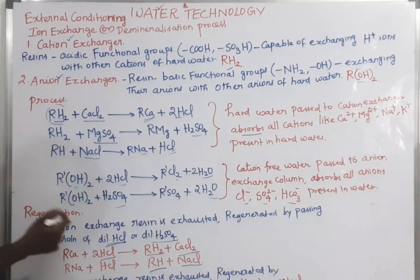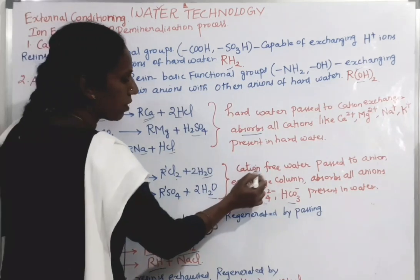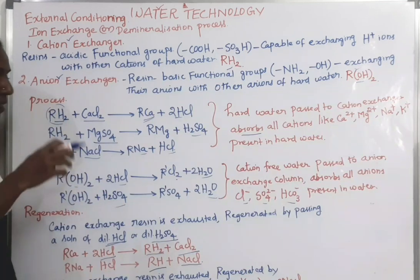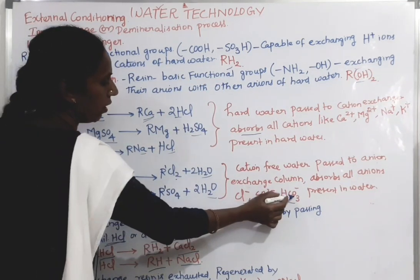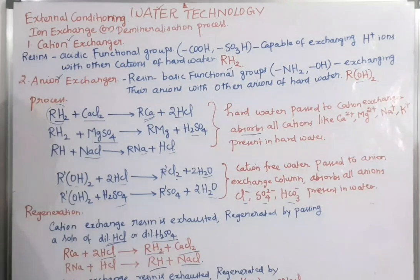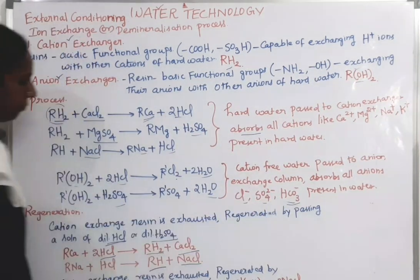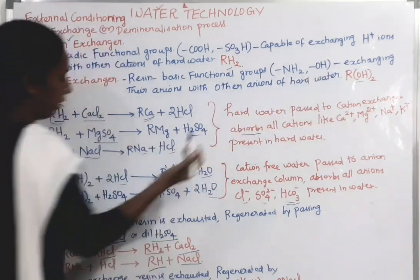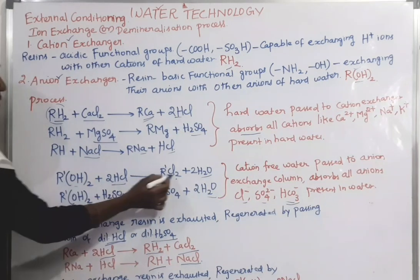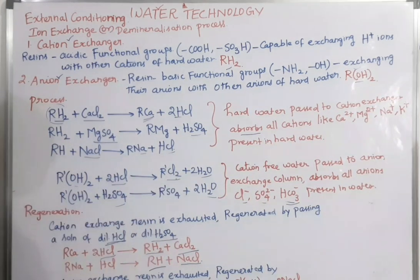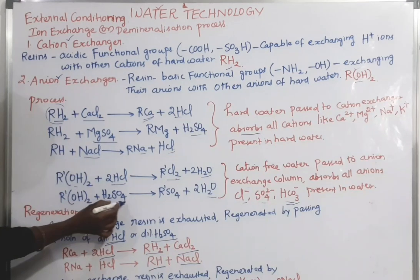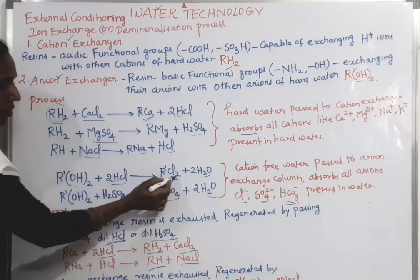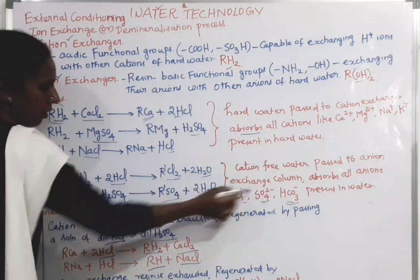In the next step, the water which is free from cations is passed into the anion exchange column, which absorbs all the anions present in the water — that is, Cl⁻, sulphate, and HCO3⁻ (bicarbonate). The reactions are: R(OH)2 plus 2HCl gives R·Cl2 plus water, and R(OH)2 plus sulphuric acid gives R·SO4 plus water, absorbing the Cl⁻ and sulphate ions.